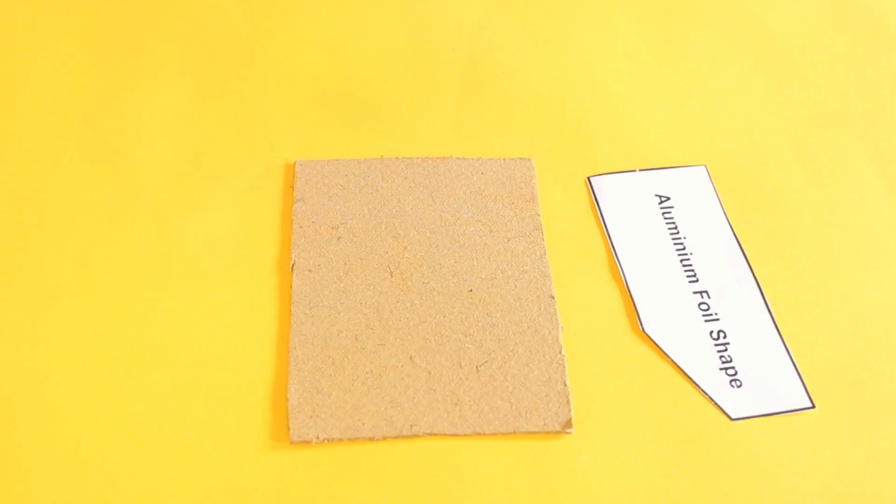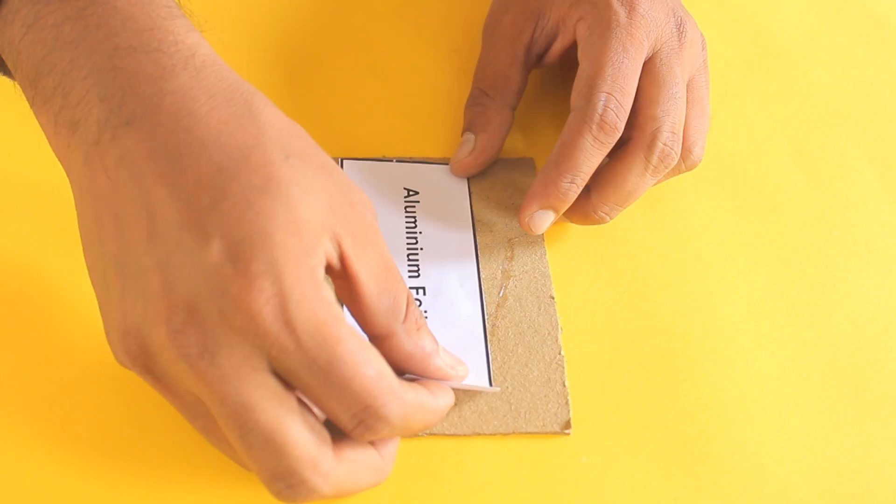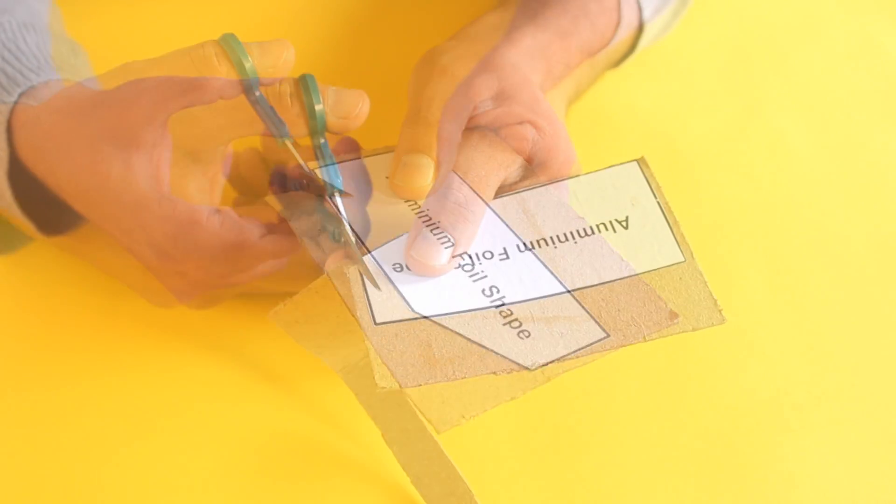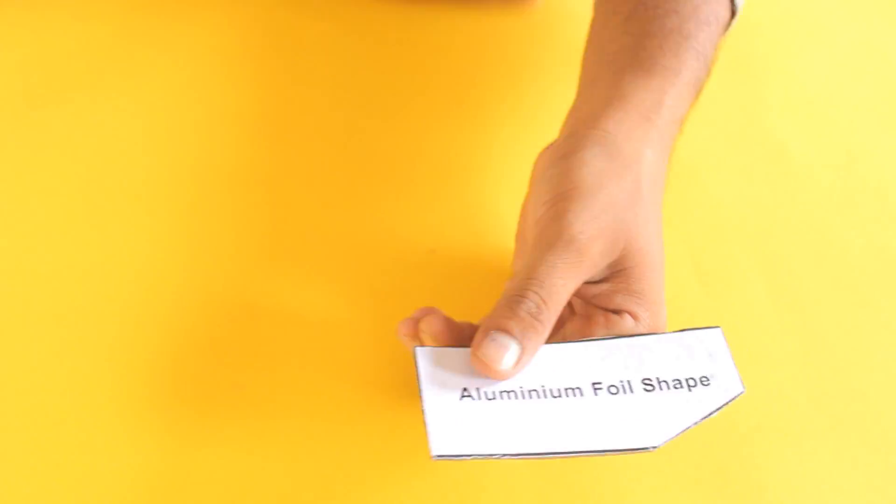Now take the template and cut the aluminum foil shape out of the template. Then take a small cardboard sheet and stick the foil shape to that sheet and cut the shape accurately. Basically the shape will be useful for cutting the aluminum foil.